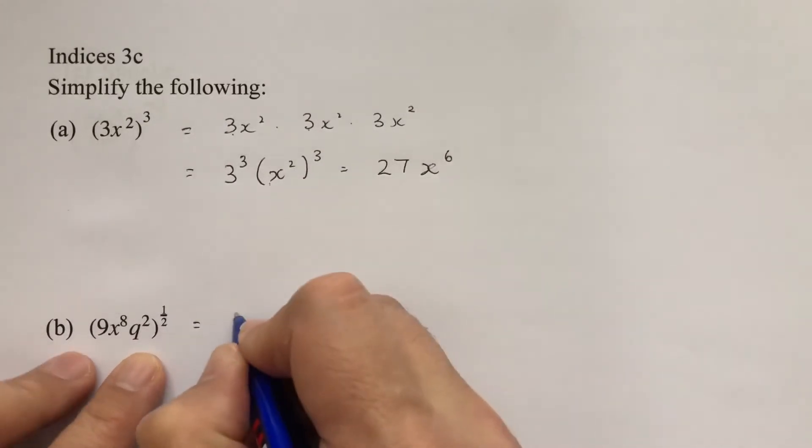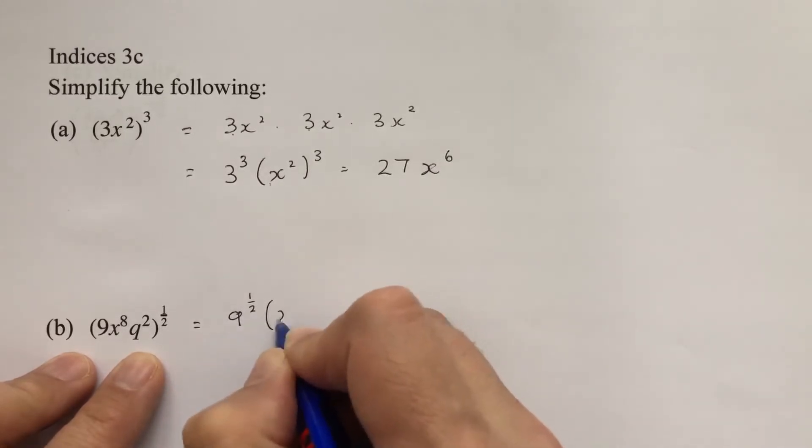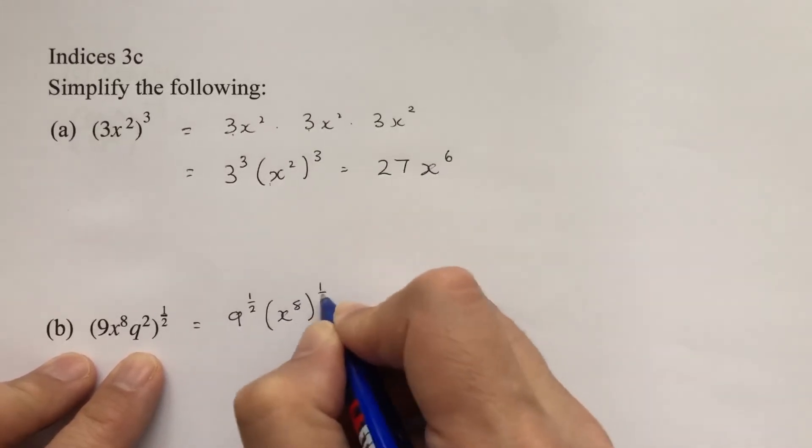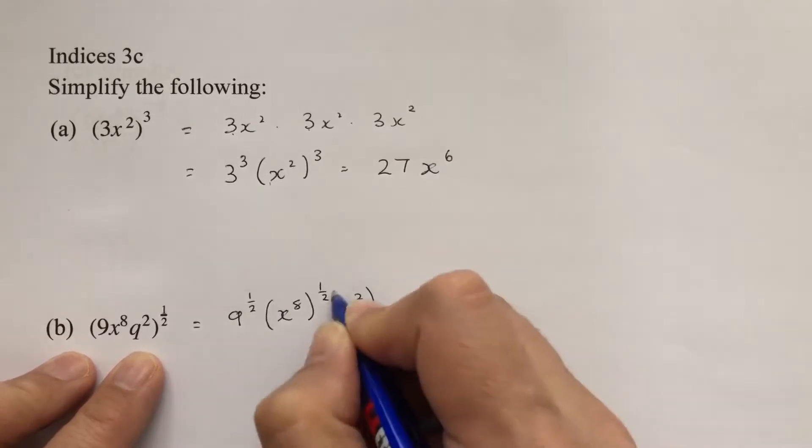So this time we've got 9 to the power of a half, x to the power of 8 to the power of a half, and q squared to the power of a half.